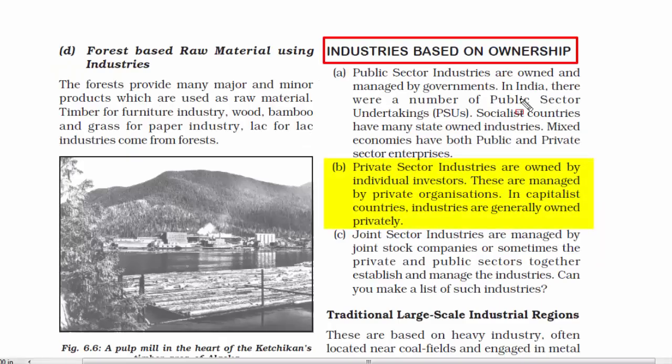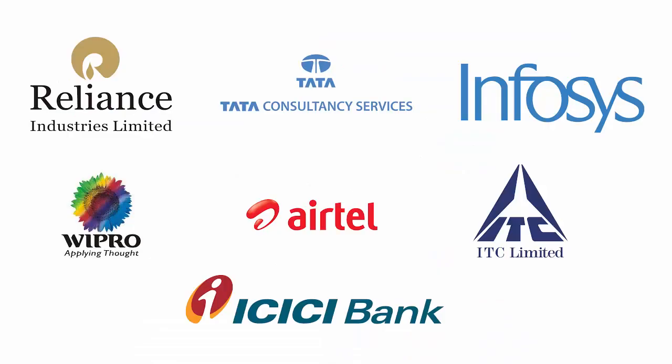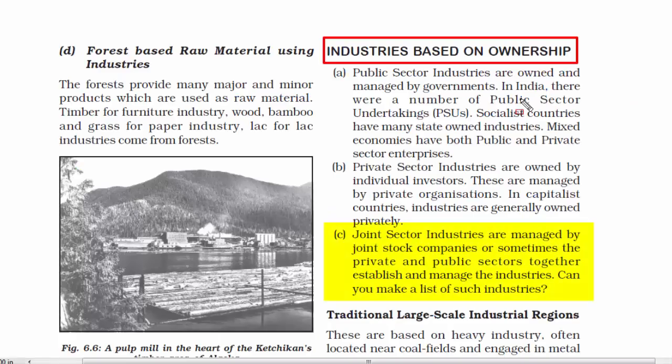The second one is private sector industries, owned by individual investors — what we call private organizations. Some examples are Reliance Industries Limited, Tata Consultancy Services, Infosys Technologies, Wipro Limited, Bharti Airtel, ITC Limited, ICICI Bank, etc. The third one is joint sector industries, where both the government and a private investor are shareholders and get into a partnership to run the industry. The fourth one is cooperative industries, where industries rely on each other based on mutual cooperation.